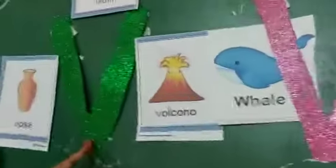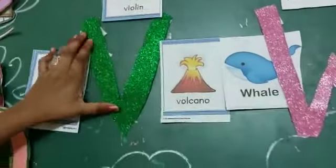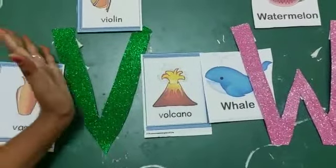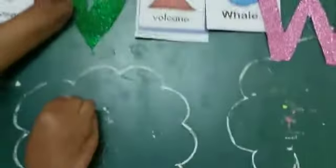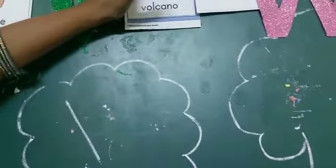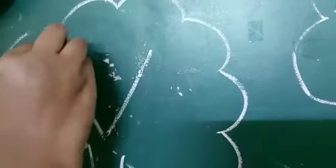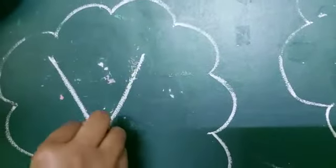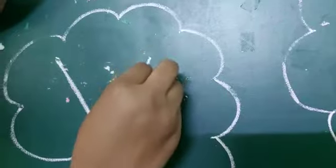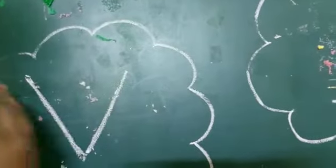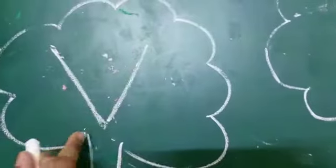First letter is capital V. See children, what is this letter called? This letter is called capital V. How to write this letter? Left slant line, right slant line. What did it become? It became capital V. How many strokes did we use to write capital V? Two strokes — left slant line and right slant line. This is letter V.